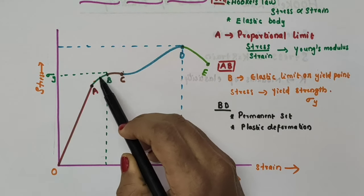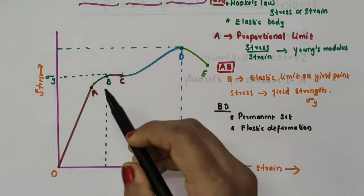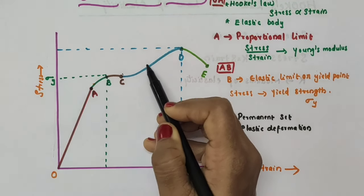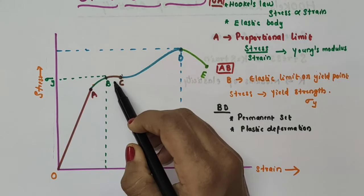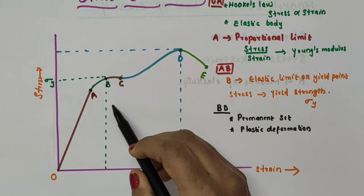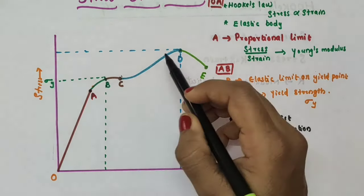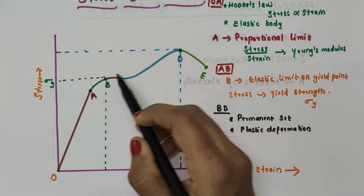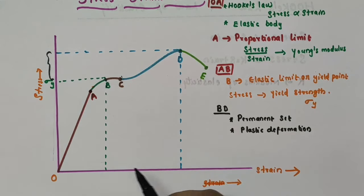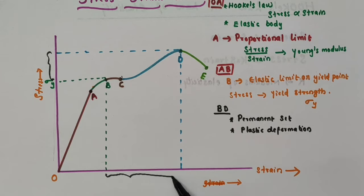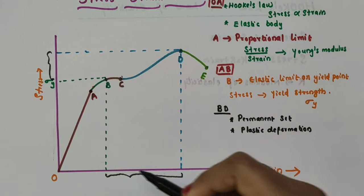Beyond this point or beyond this limit, the body does not return to its original dimension. If the load is increased further, the stress developed exceeds the yield strength σy, and even for a small change in stress, the strain increases rapidly. This portion of the curve from B to D shows that — from B to D, the change in stress is small, but the change in strain is very large. So for a small change in stress, the strain increases rapidly.